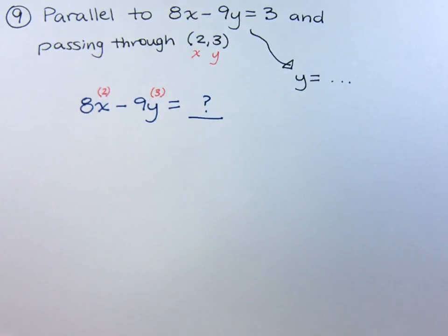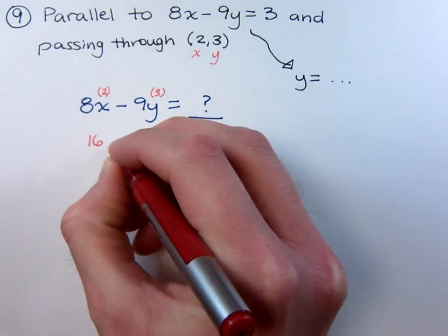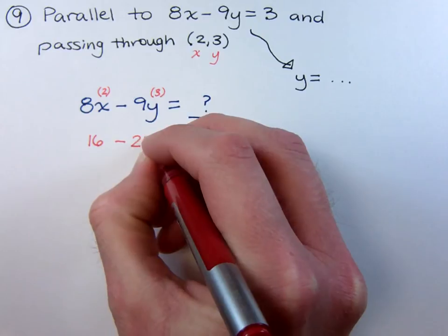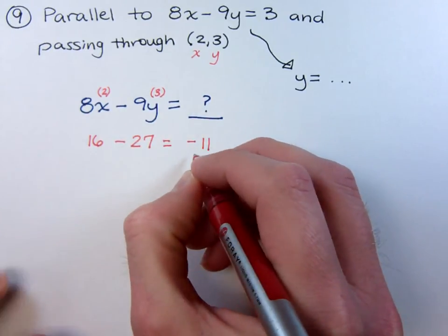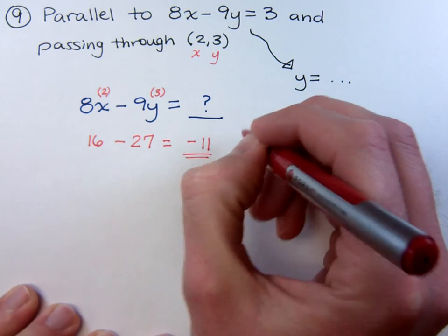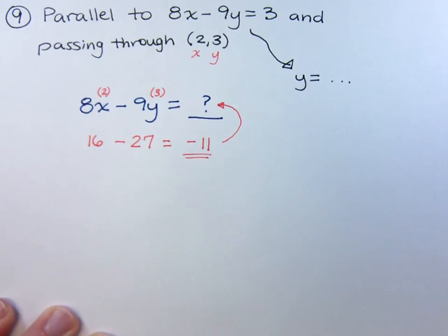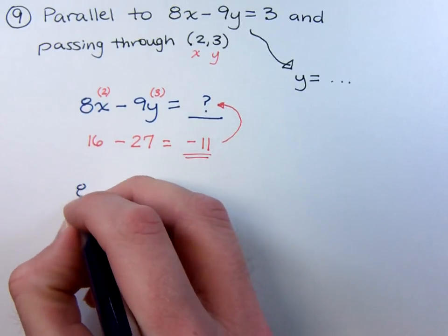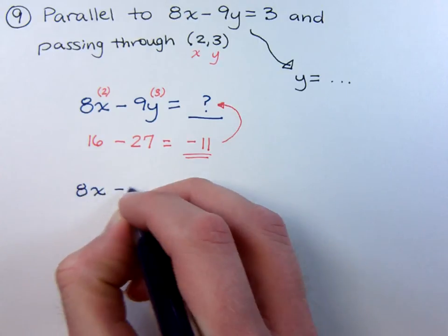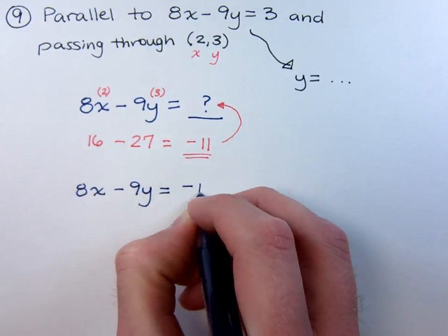When you do that, you end up with 16 minus 27, and that equals negative 11. This number right here is the number that's supposed to be right here. So the answer to this question very easily is 8x minus 9y equals negative 11.